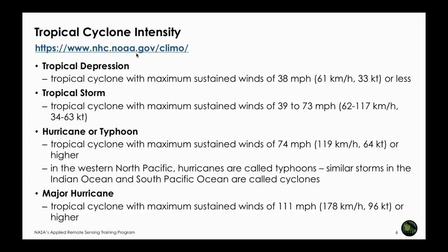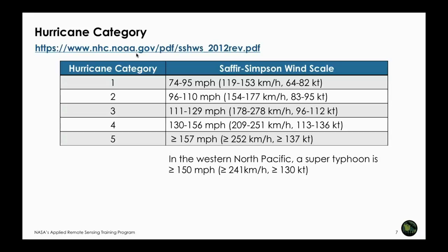We also saw last week how damage occurs as wind speed increases. We talked about the Saffir-Simpson wind scale — the different hurricane categories or super typhoons, ranging from 74 or 109 kilometers per hour all the way to greater than 252 kilometers per hour. These are the major hurricane categories. When you see a forecast with these names or categories, you know the wind speed and how much damage it might cause.